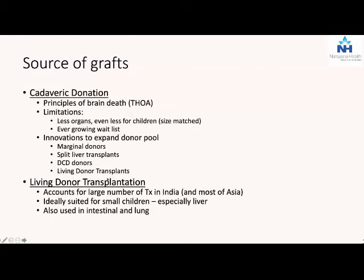The other option when you don't have cadaveric donors is living donor transplants. This is probably the largest cohort of donors in Asia. In India, almost 90% of all transplants across the country are living donor, and the same situation exists in many Asian countries. In children, it is ideally suited, especially in the liver, because you can get the left lateral segment - segments two and three - which is usually adequate for most infants and children. For anybody less than 10 kilos, the left lateral segment is ideal. For the donor it is a much smaller operation with much less morbidity and mortality risk. For the recipient, the organ size is about perfect. Living donor transplantation can also be used for intestinal and lung transplantation, though these are not common practices.